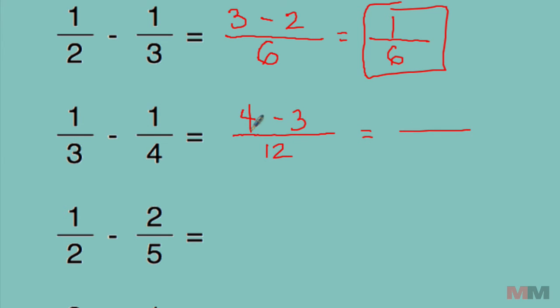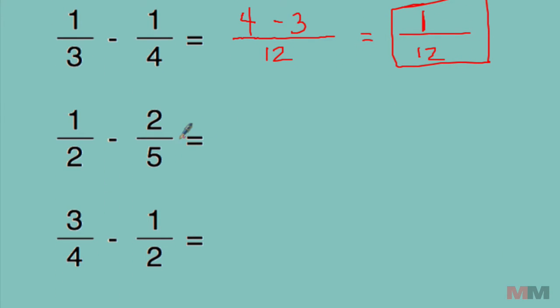And then simplify, four minus three, that's just one over twelve. One-third minus one-fourth is one twelfth. Let's keep going, we're on fire! Two times five, that's ten. Start with the numerator, one times five, put that result right there, minus two times two, four. Five minus four, simplify that, that's just one over ten.